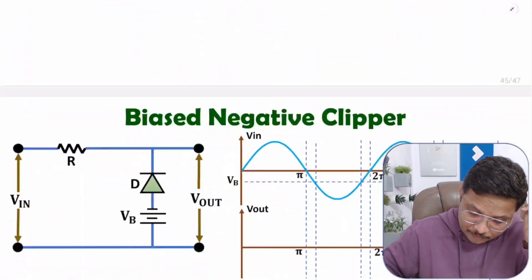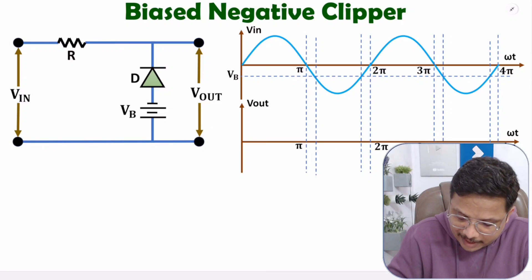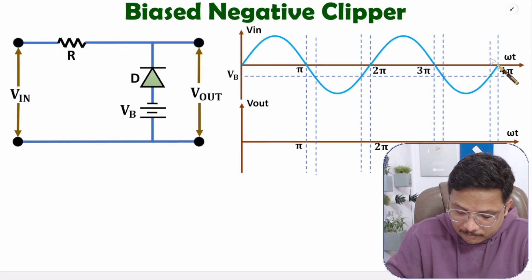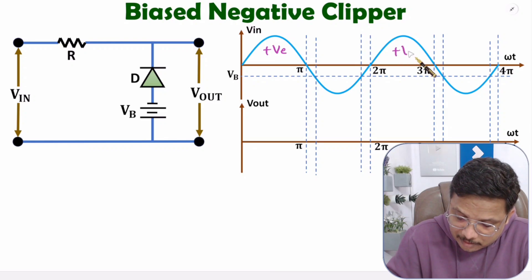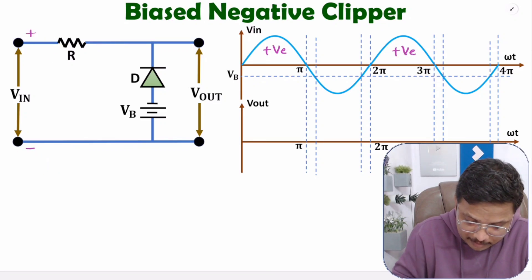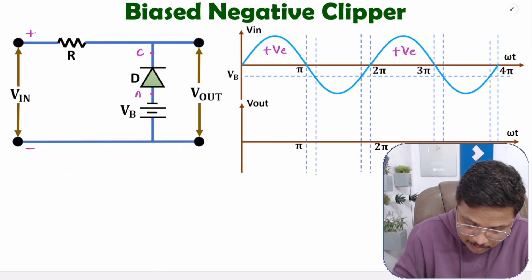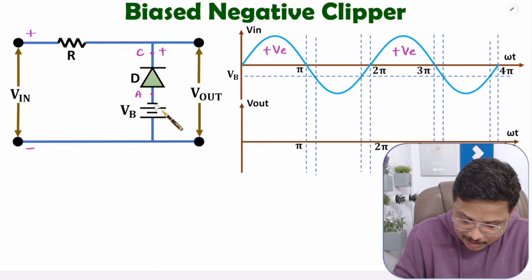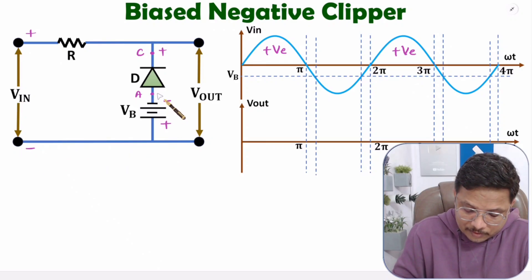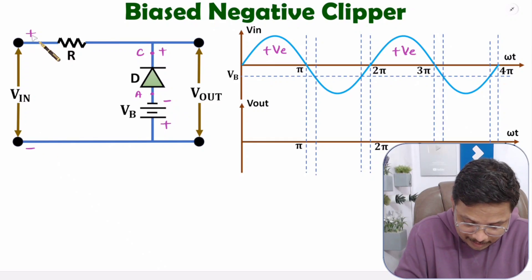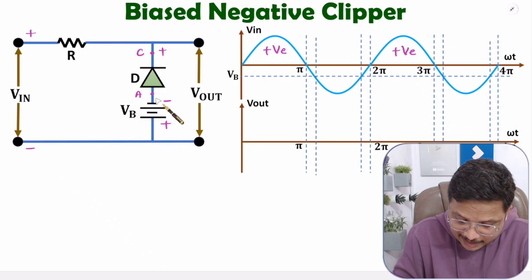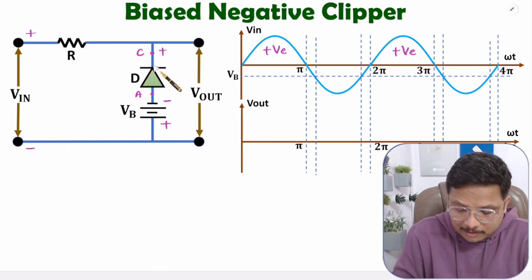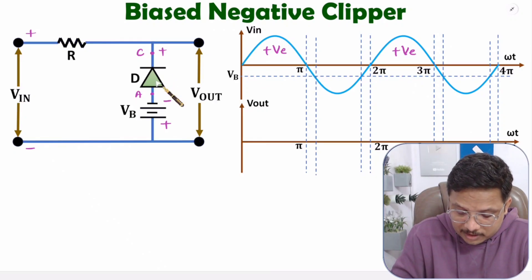Now I will explain the biased negative clipper. Here we have the input — a sinusoidal waveform applied over here — and the output that we are taking from these two terminals. Let us understand the positive half cycle of V-in. During positive half cycle we have plus voltage here and minus here, so here we have cathode and here we have anode. VB has its minus terminal here and plus terminal here, so cathode is positive with respect to anode during the positive half cycle. This diode comes into reverse bias.